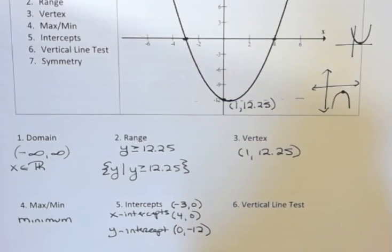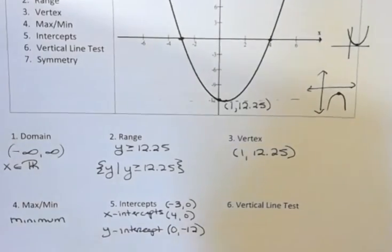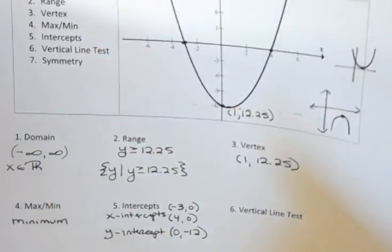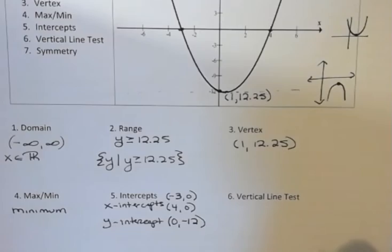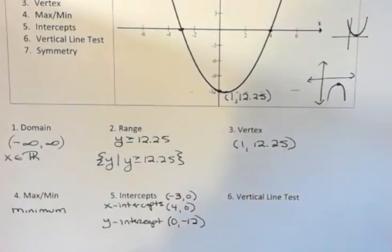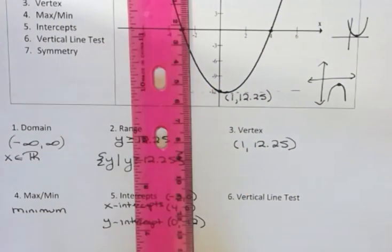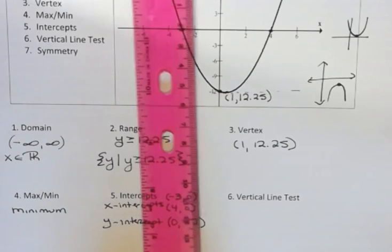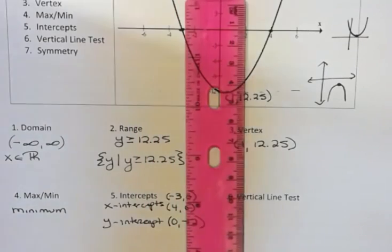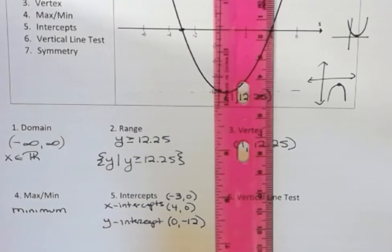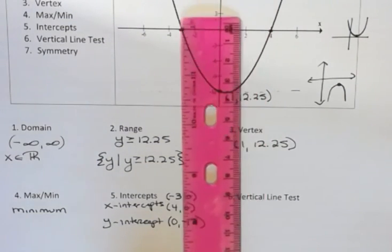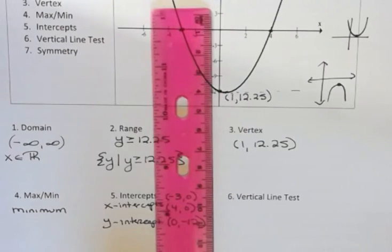Vertical line test. This is a simple test you can use to see if something is actually a function. You can use this by just thinking about putting a vertical line down across your graph. And anywhere you put that vertical line, it should only cross the graph one time. So if you're just looking at the right edge of my ruler, you can see that no matter where I move that right edge, it only can cross that graph one time.